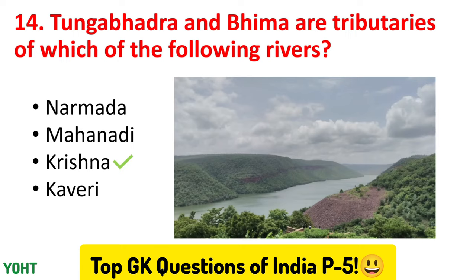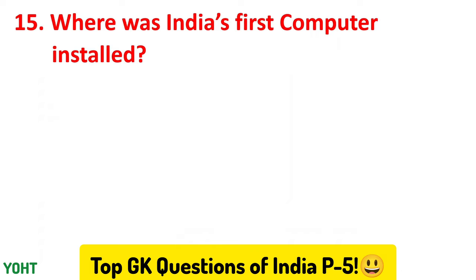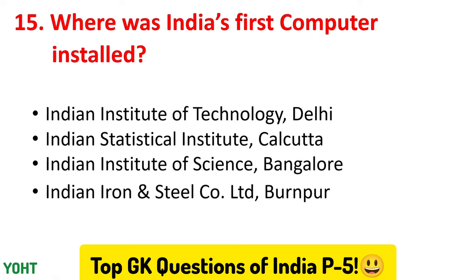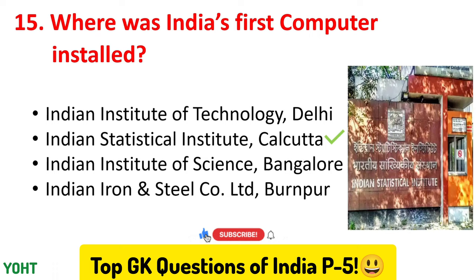Now let us see the last question of this video, which is question number 15. Where was India's first computer installed? The options are Indian Institute of Technology Delhi, Indian Statistical Institute Calcutta, Indian Institute of Science Bangalore, and Indian Iron and Steel Co. Ltd. Burnpur. The correct answer to this question is option number two, Indian Statistical Institute, Calcutta.